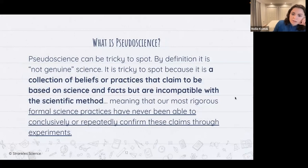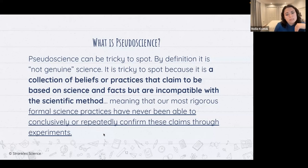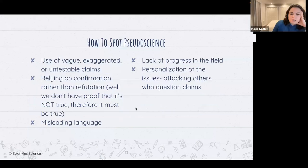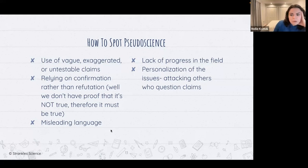Pseudoscience can be tricky to spot, but by definition it's not genuine science. It's a collection of beliefs or practices that claim to be based on science and facts but are incompatible with the scientific method — our most rigorous formal science has never been able to conclusively or repeatedly confirm these claims through experiments. You can spot pseudoscience if it uses vague, exaggerated, or untestable claims; relies on confirmation rather than refutation; uses misleading language; shows a lack of progress in the field; or attacks people who question what they're talking about.